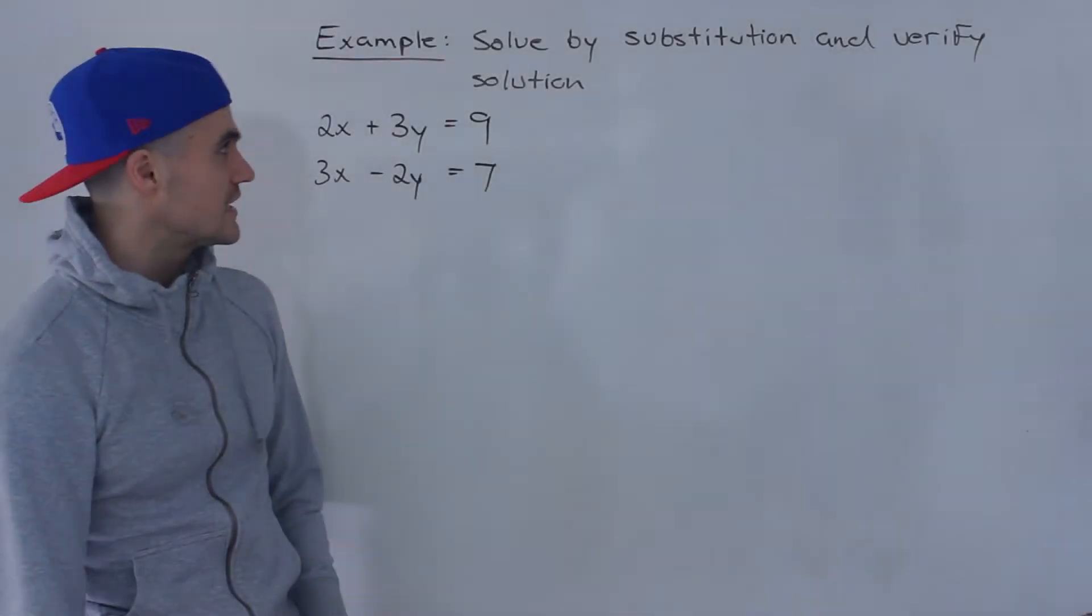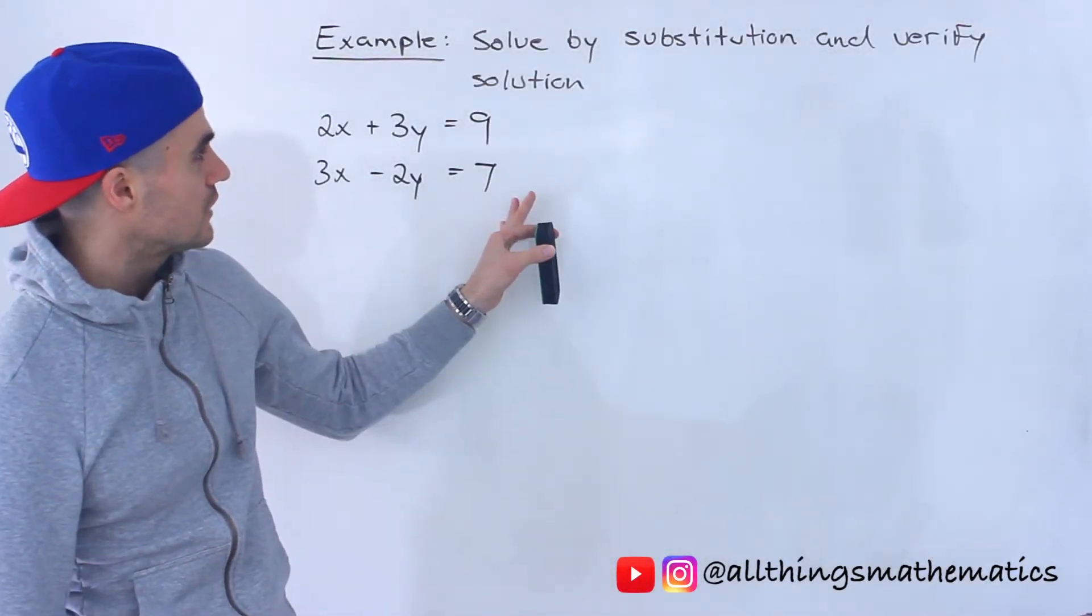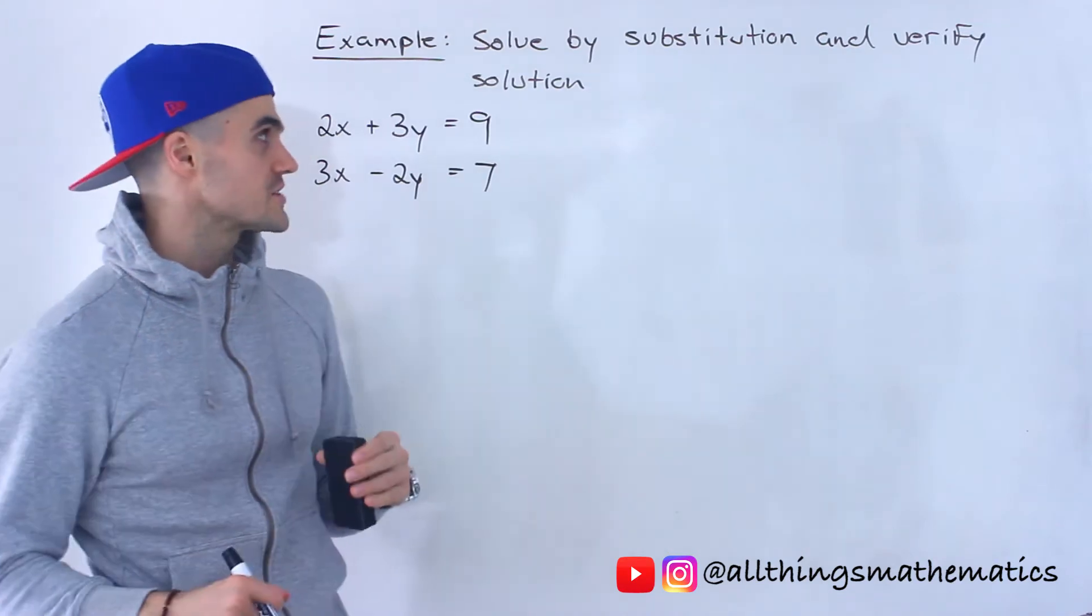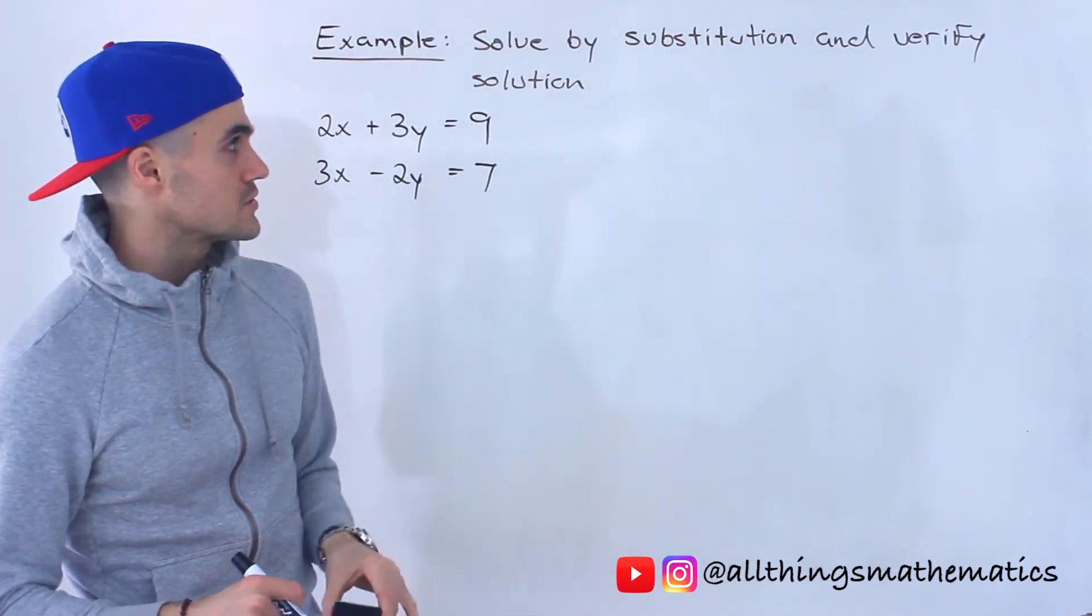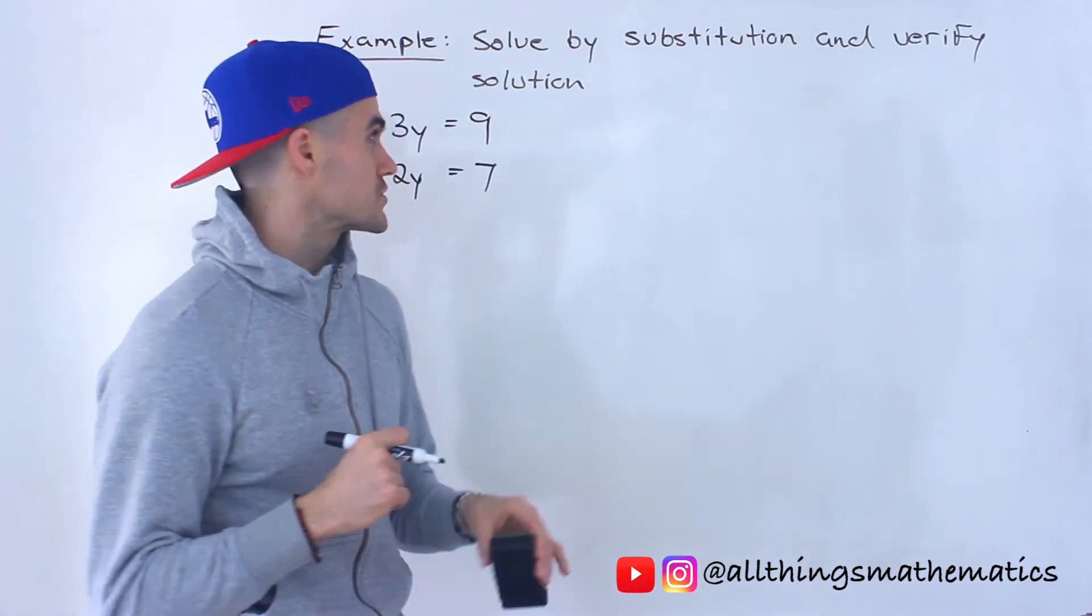Welcome back everyone. Moving on to the next question. We've got to take these two lines here, find where they're going to intersect, and we've got to find that point of intersection using substitution. Then we've got to verify our solution.